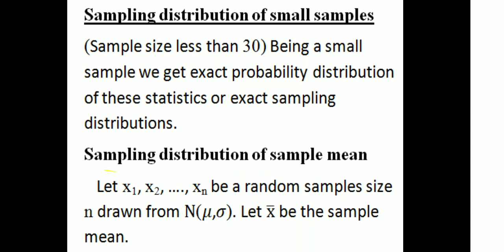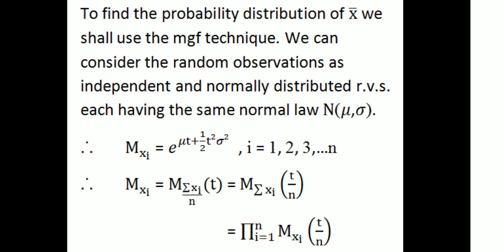Let x1, x2, etc., xn be a random sample of size n drawn from N(mu, sigma). The normal distribution with parameters mu and sigma. Let x-bar be the sample mean. To find the probability distribution of x-bar, we shall use the moment generating function technique. We consider the random observations as independent and normally distributed random variables, each having the same normal distribution N(mu, sigma).